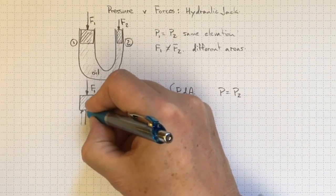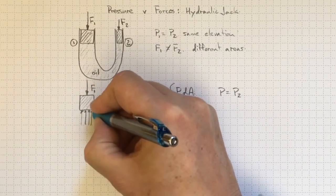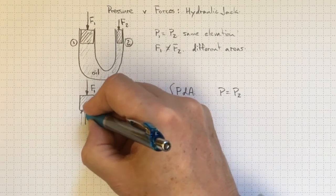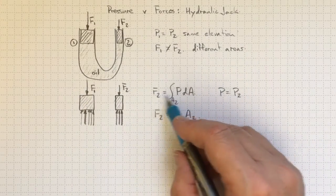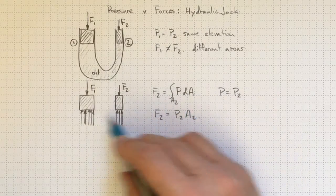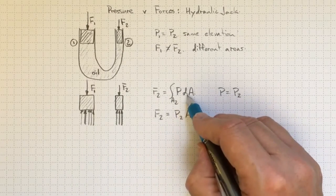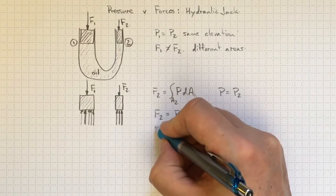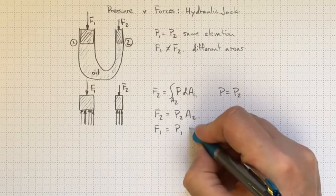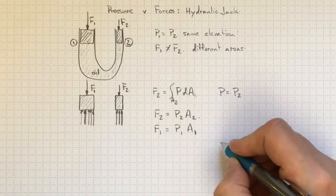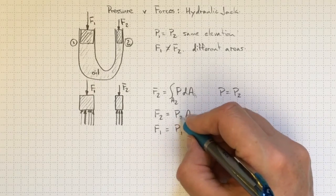we've got the same pressure, but it's acting over this larger area on this larger piston. So the result is, for exactly the same reasons, we've got F1 equal to the integral over area one of pressure at one over dA. And we'll wind up with F1 equal to P1 A1.